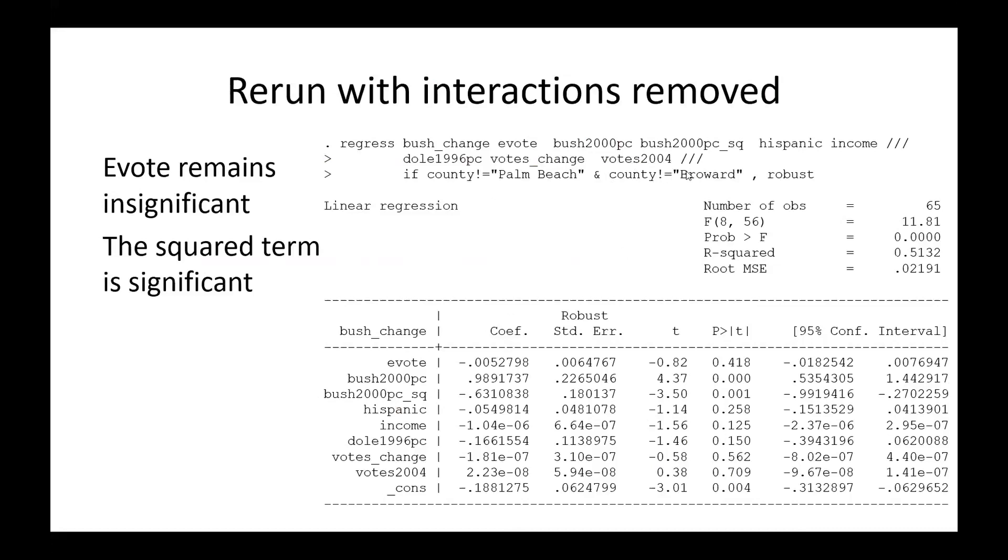Intermediate summary. Interaction depends on two observations. Taking it out, there is no evidence that e-voting affected the outcome. Upon removal of the two observations, the quadratic term is now significant. That surprises us. And I will stop here. But in the next segment, we will look at whether this or why this is true a little bit more closely.